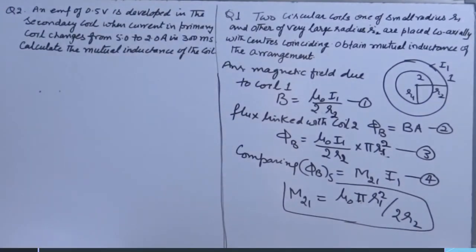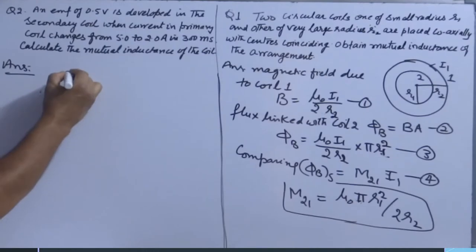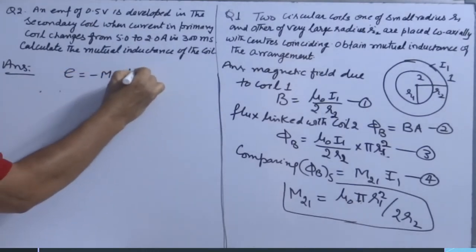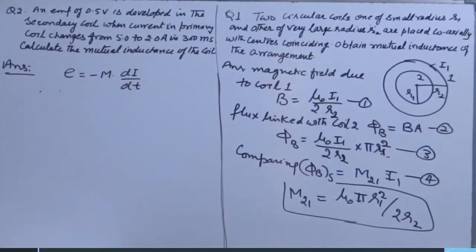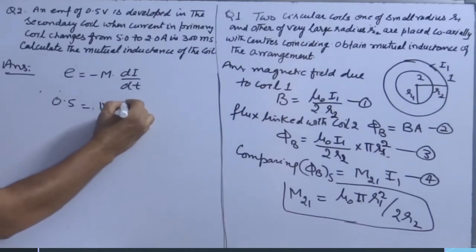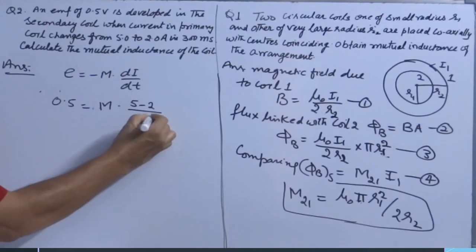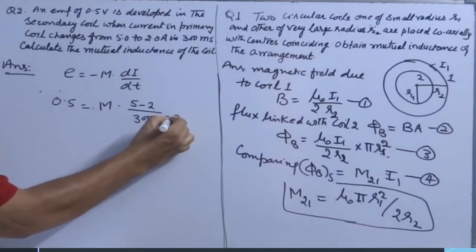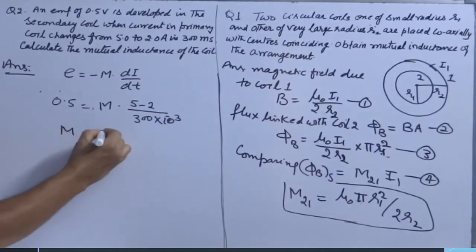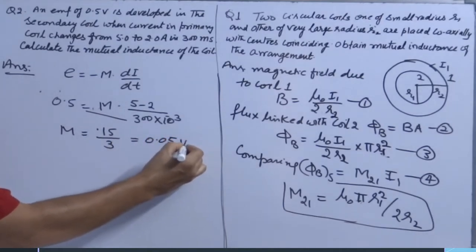Now here, EMF of 0.45 is simple question. When current in primary is this and this, use E equals minus M dI over dT. Even minus is not required because it is the direction of induced EMF. So put E equals 0.5. Current changes from 5 minus 2 divided by 300 milliseconds, 10 to the power minus 3. So M comes out 1.15 when you multiply cross divided by 3. Answer is 0.05.